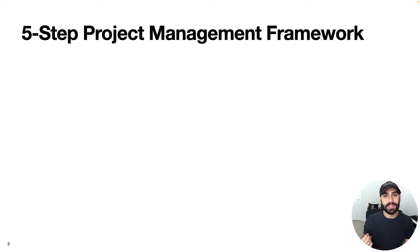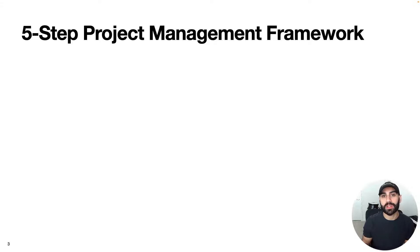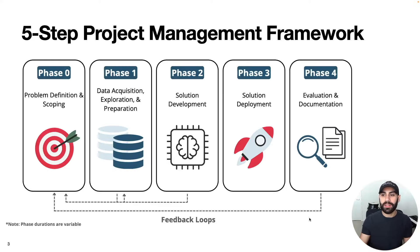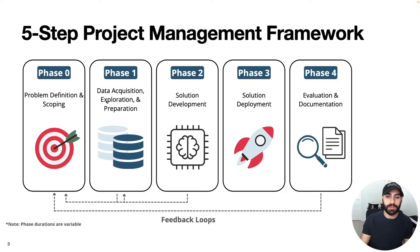However, there are some unique considerations for data science projects, which brings up a five-step project management framework I like to use when approaching a model build or the development of some other data-driven solution. The framework is broken down into five phases starting from phase zero, which is the problem definition and scoping phase. Phase one is data acquisition, exploration, and preparation — we can also think of this as all the data engineering work.